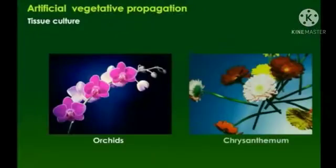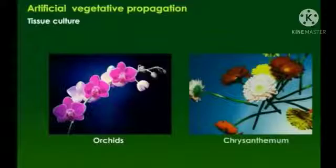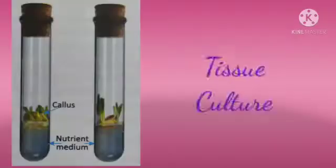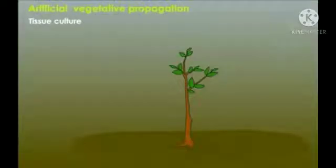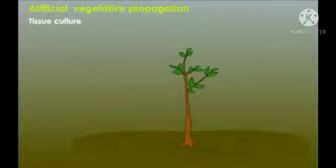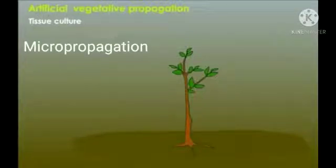Tissue culture is used in the propagation of orchids and chrysanthemum. It is used for rapid vegetative propagation as well as for the production of disease-free and pest-resistant plants. Tissue culture is also known as micropropagation.